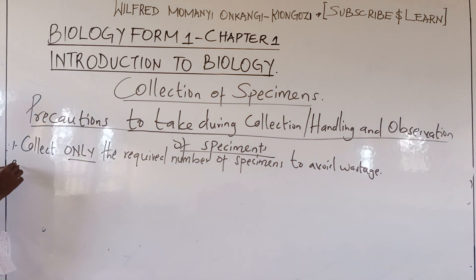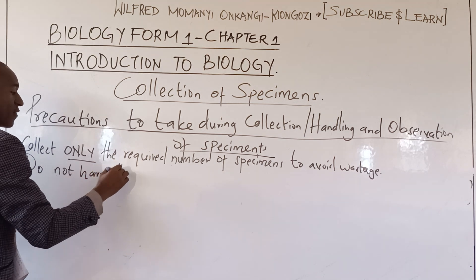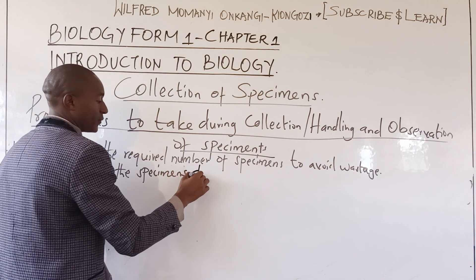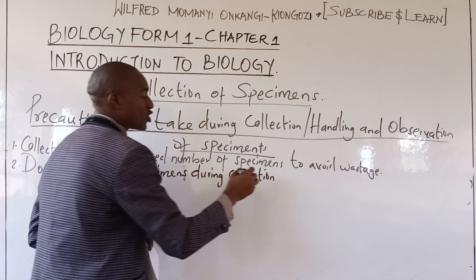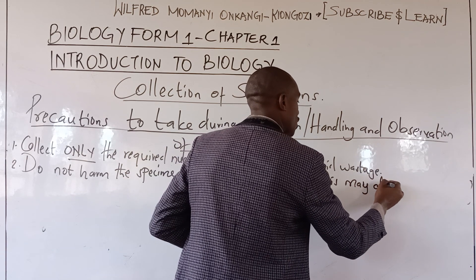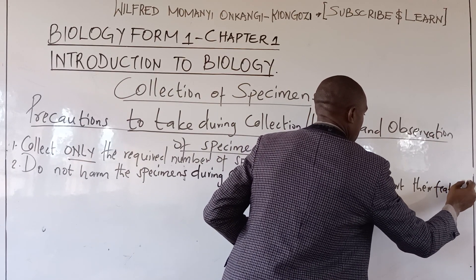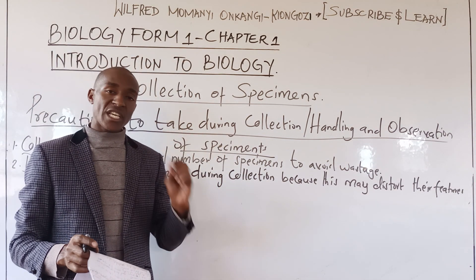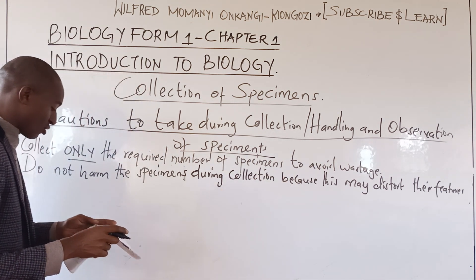Number two: do not harm these specimens during collection, because harming them may distort their structures. For example, if you are collecting grasshoppers or cockroaches for study and you break their limbs, you will not be able to observe the walking legs, antennae, wings, or anything else properly. Please ensure you don't harm them so that you don't distort their structure.